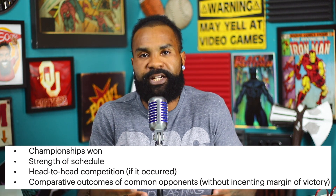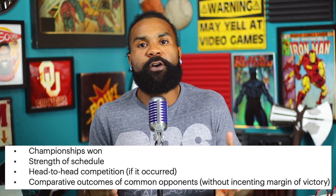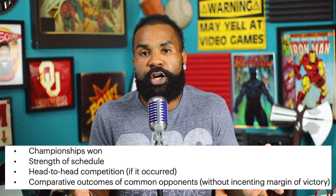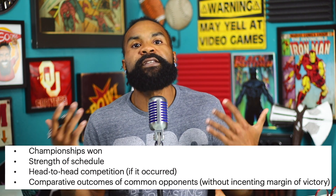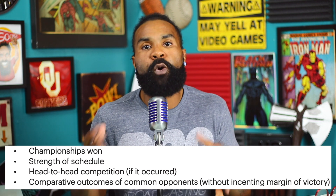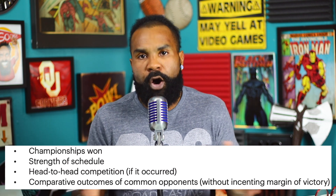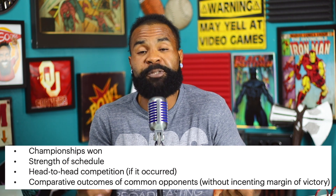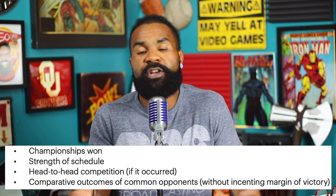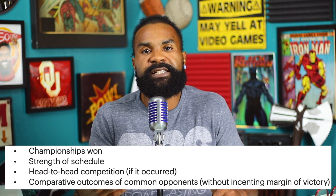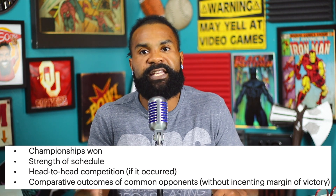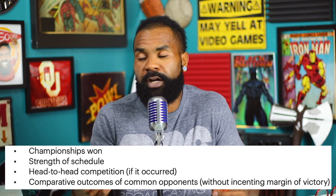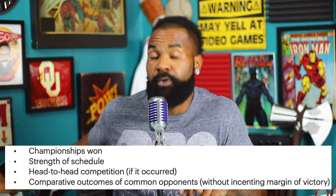They're also supposed to take a look at strength of schedule. We'd expect power five versus power five to be in consideration, but also head-to-head matchups if they occurred. Oklahoma playing Texas matters, LSU playing Alabama matters, Ohio State–Michigan matters. This should also hurt Clemson, because they really haven't played anybody that anybody respects, whereas Ohio State has played FBS teams all the way through and has already beaten a Wisconsin team and a Michigan State team that a lot of people did respect.